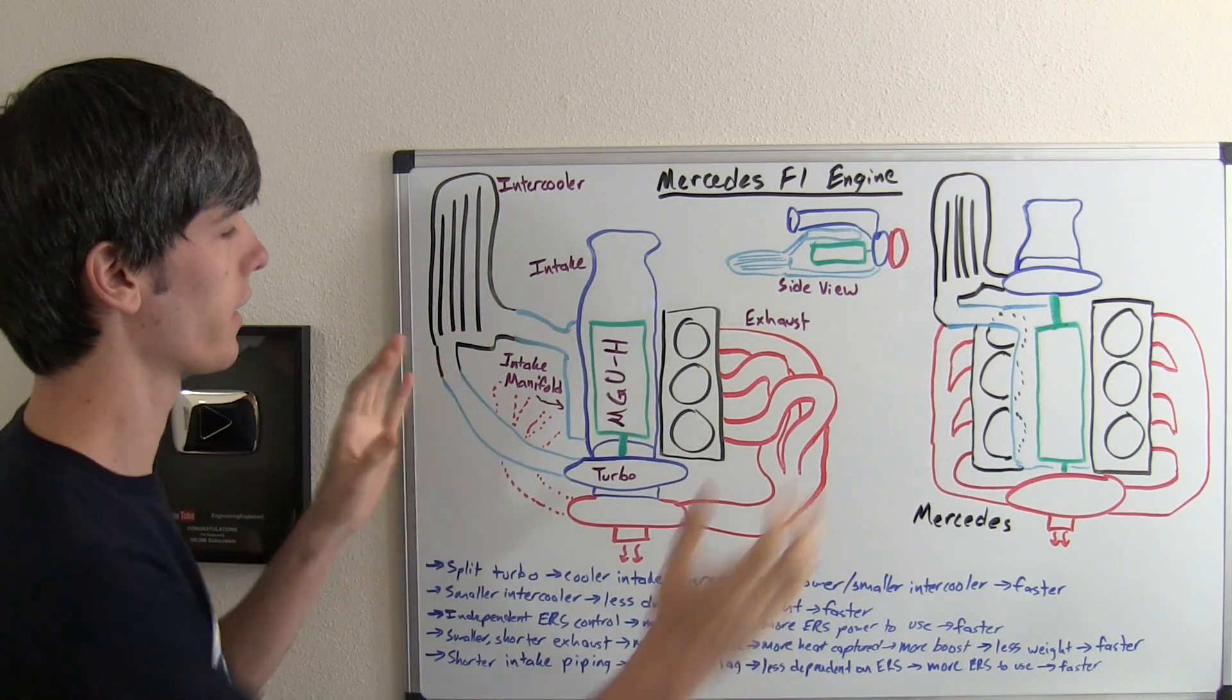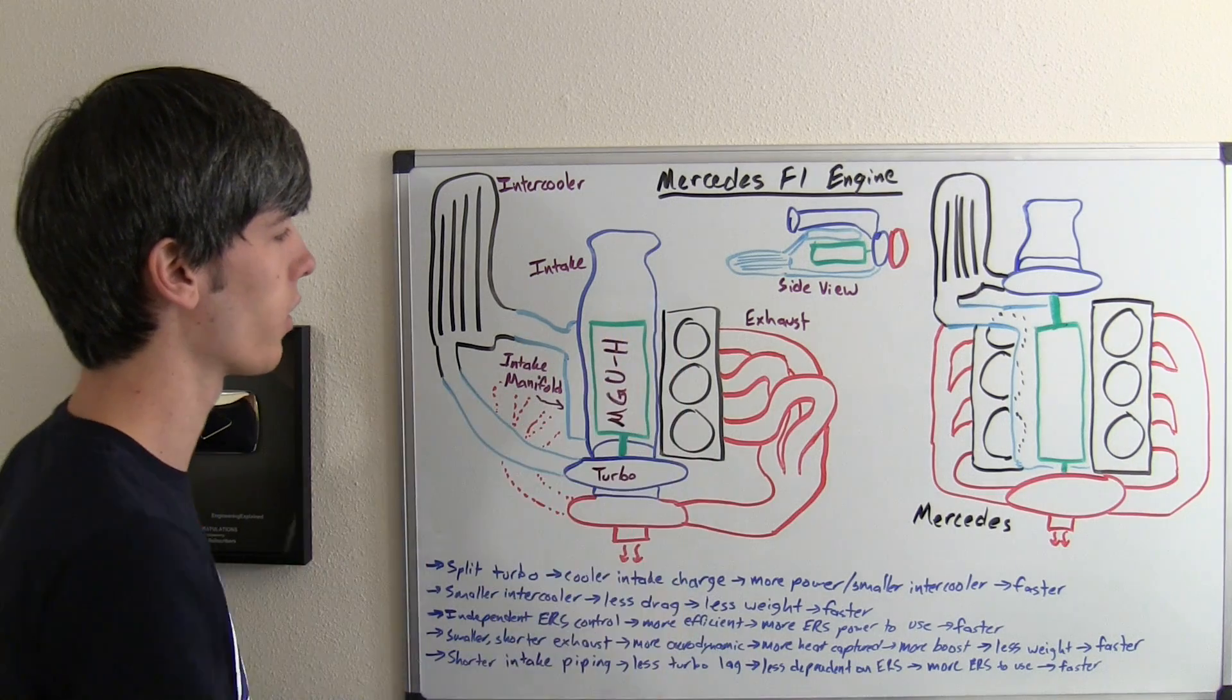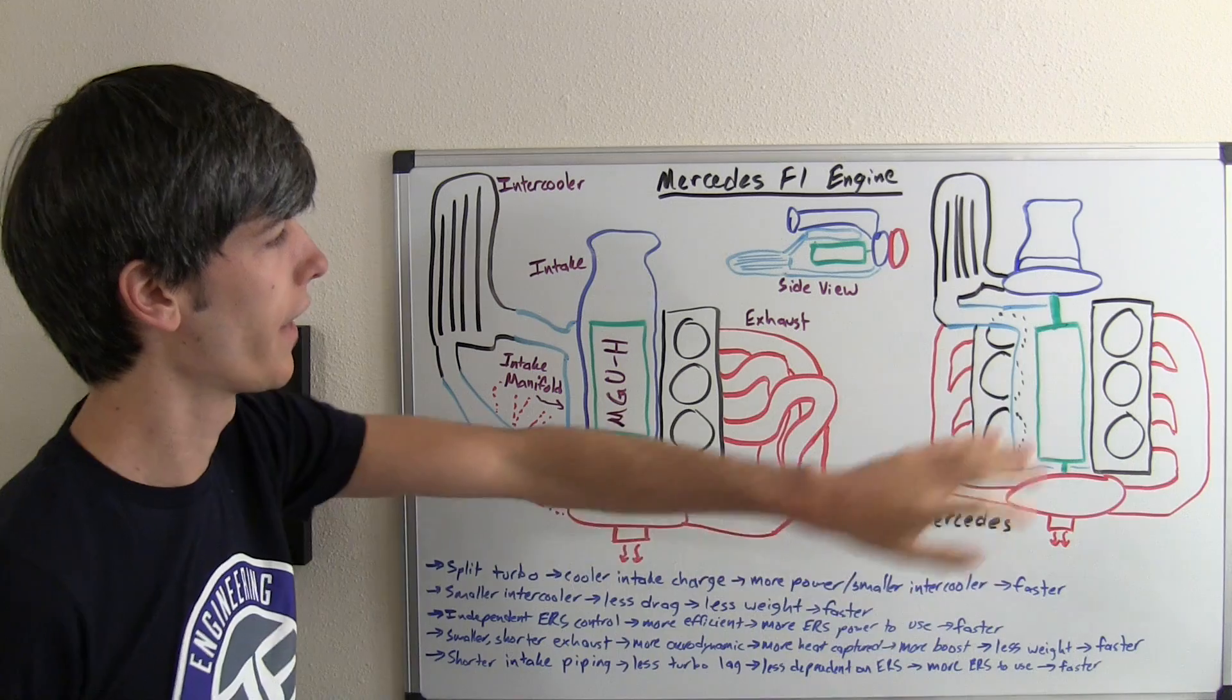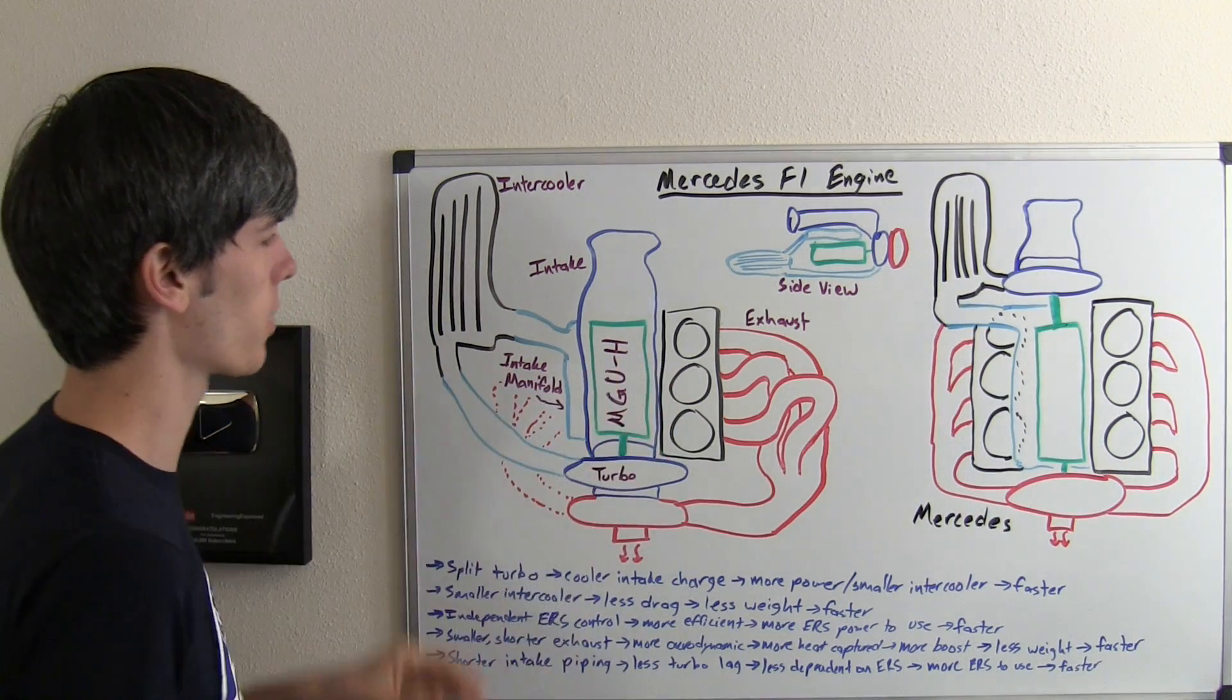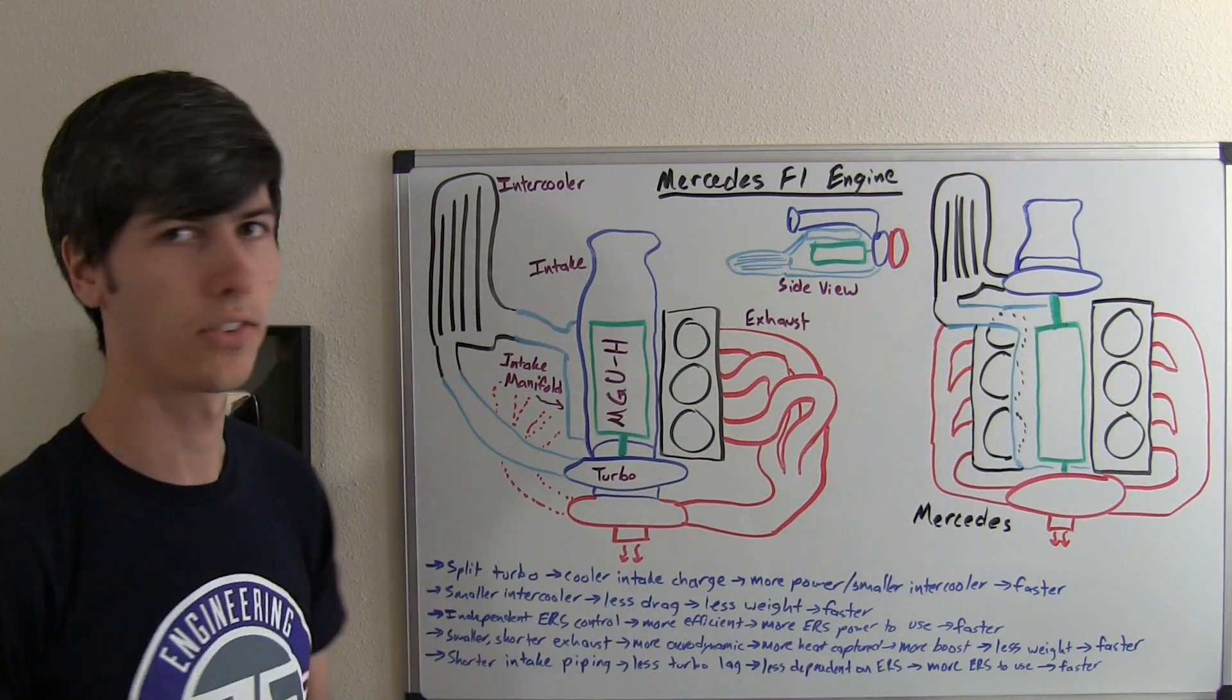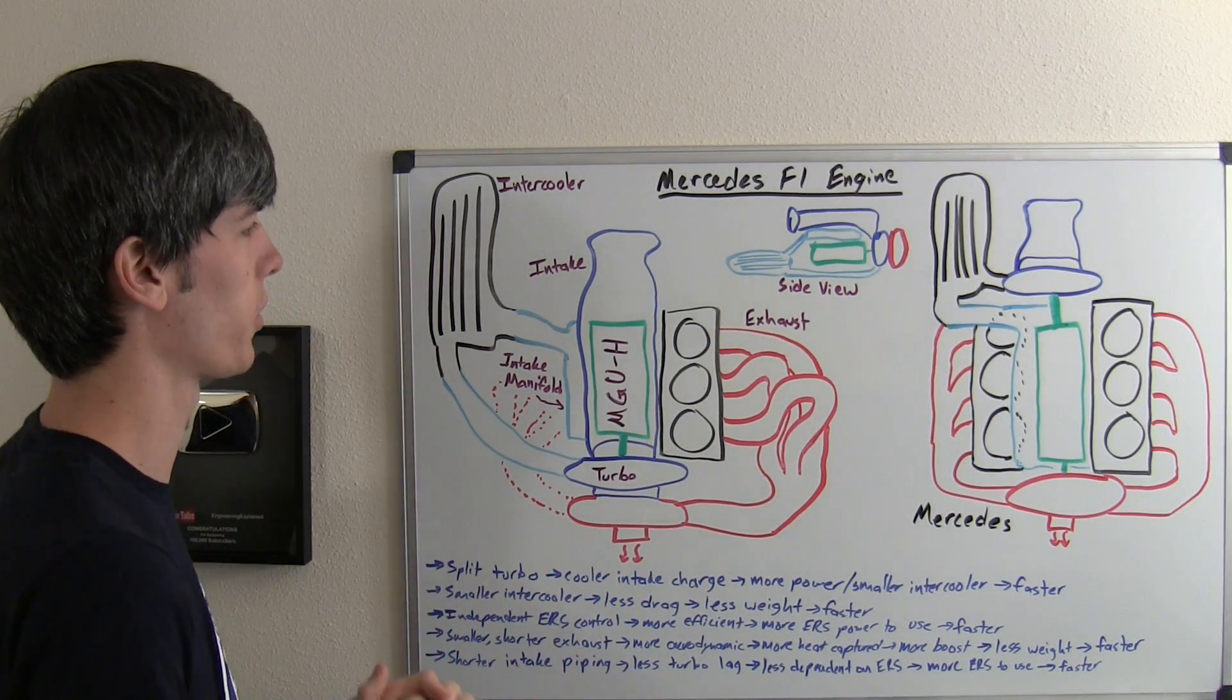Looking at this, what we've got going on is here on the left a standard F1 engine - this is basically like the Renault engine - and then here on the right the Mercedes engine. I'm going to talk about first what we're looking at and then get into the detail of the differences and how those are advantageous for Mercedes.